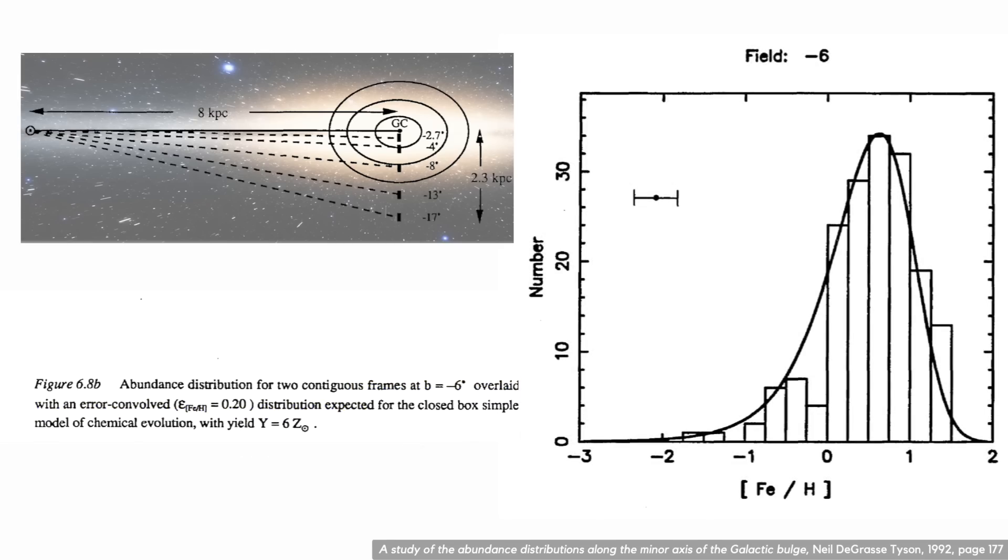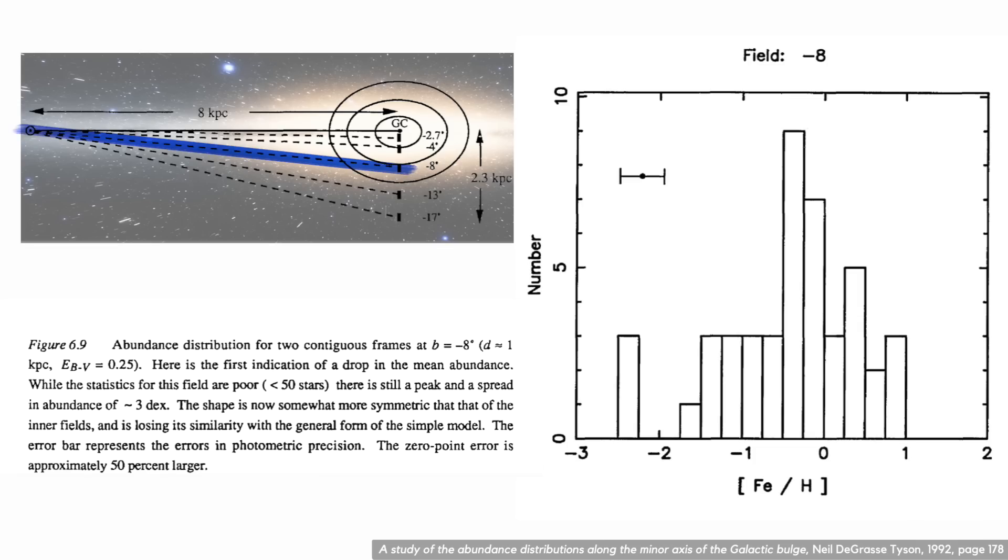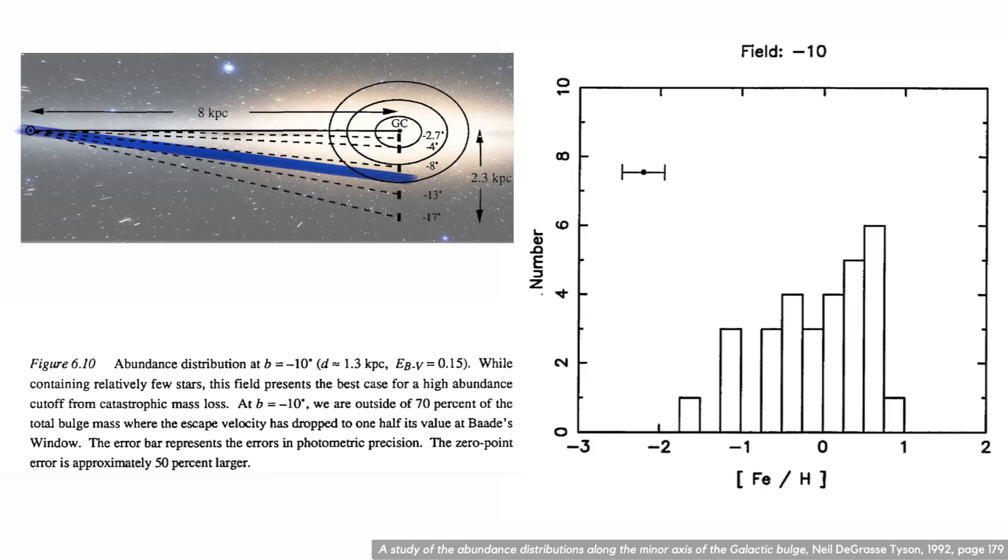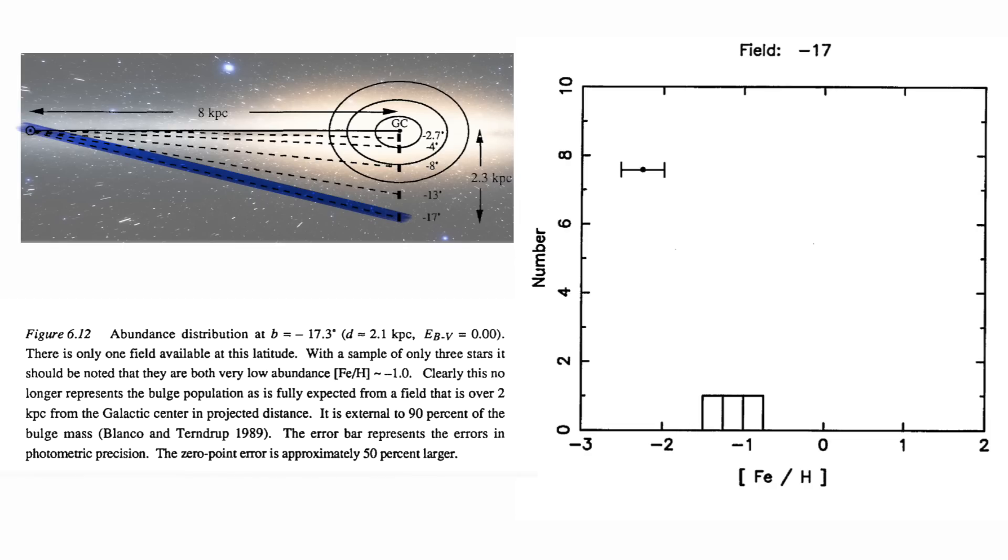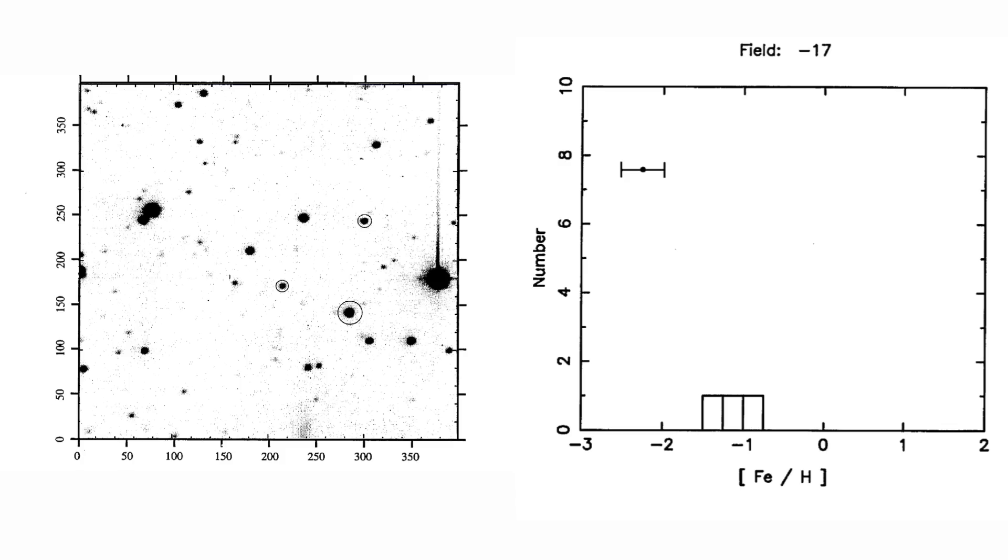The next few fields show a shift to the left and a drop in average abundance. We might be seeing that the box is now leaking or there's a more complicated process at hand, but there are also not many stars being measured here. The last field out in the halo only has three stars. This is them. So he doesn't really have a lot of statistics on his side here.